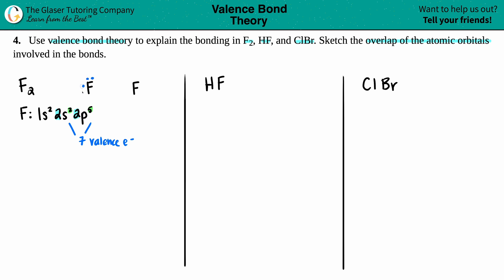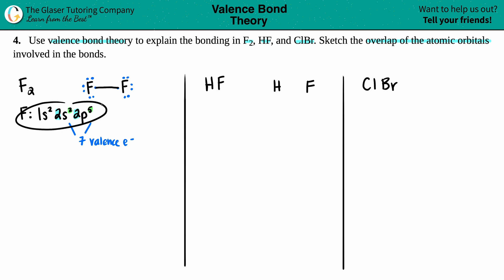So each fluorine has seven valence electrons: one, two, three, four, five, six, seven. I'll move this fluorine over a little bit, then draw one, two, three, four, five, six, seven for the other fluorine, and make the single bond between one electron and one electron. That's the Lewis structure for F2. Now let's do the Lewis structure for HF. Fluorine's electron configuration is 1s² 2s² 2p⁵, giving seven valence electrons - so seven dots around fluorine.